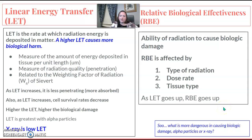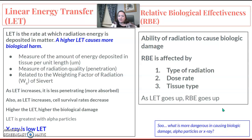LET and RBE are two different terms that are sort of similar, or they have a direct relationship — they go in the same direction. Linear energy transfer, or LET, is the rate at which radiation energy is deposited in matter. Higher LET causes more biological harm.